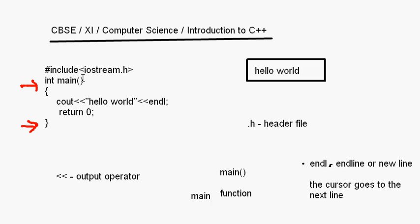So this was a simple C++ program. We looked at the header file iostream.h which contains all your input/output classes — istream for input, ostream for output. And we have seen cout, which is for output. Whenever you want to output something you write cout, then the output operator, and whatever you want to print goes there.